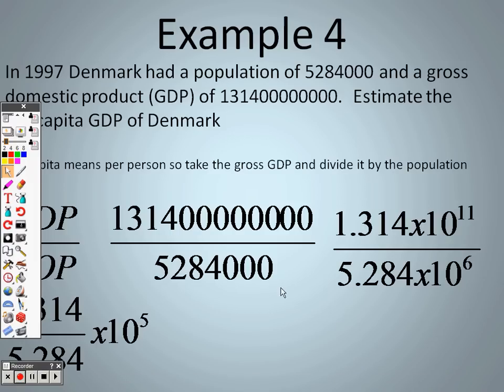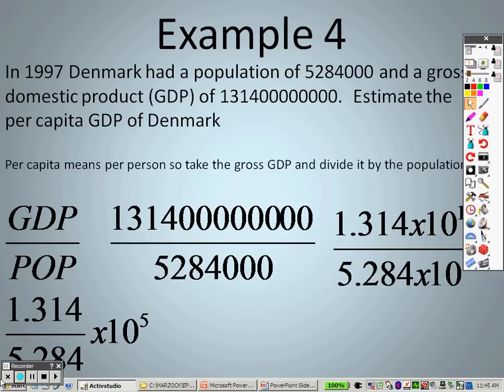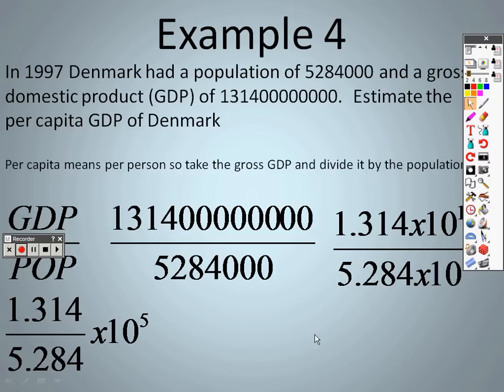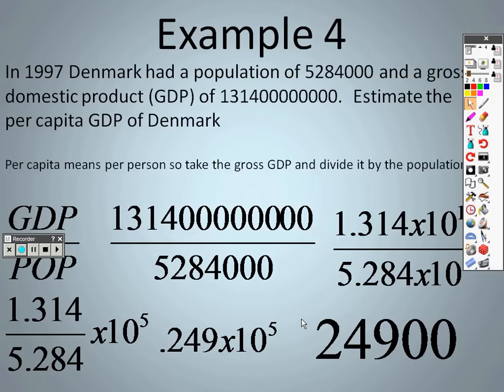So the reason I did this is I can now separate this into 1.314 over 5.284. And this was 10 to the 11th and 10 to the 6th. So I subtracted them, because it's a fraction. So 10 to the 11th over 10 to the 6th gives me, when I subtract them, 11 minus 6 is 5. So really I have 10 to the 5th power times whatever this is. So on the calculator, you just divide those two, and I get .249 times 10 to the 5th. And then 10 to the 5th means I move this 1, 2, 3, 4, 5 decimal points. And there's your answer, 24,900.